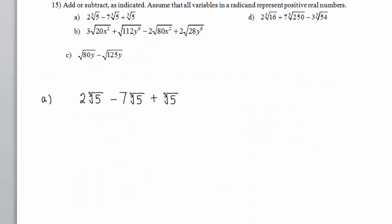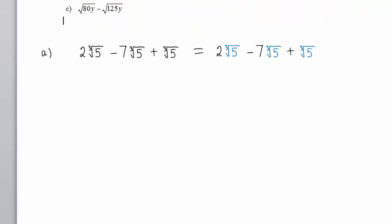In Part A, we must add or subtract these radicals as indicated. When you're adding and subtracting radicals, you need to look for like terms. What makes a like term? The same value under the same radical. We have 2 times the cube root of 5, minus 7 times the cube root of 5, plus the cube root of 5.